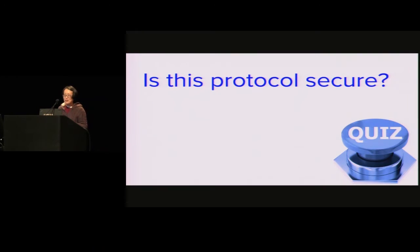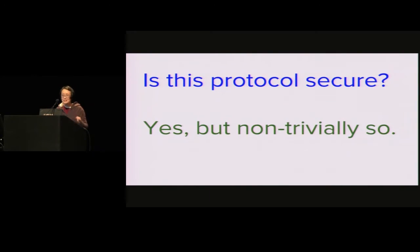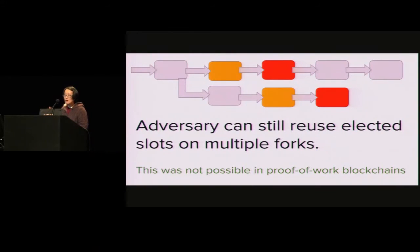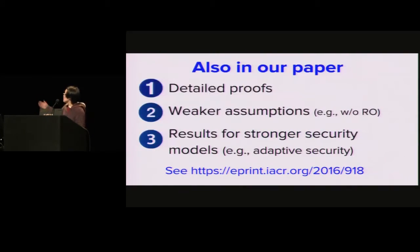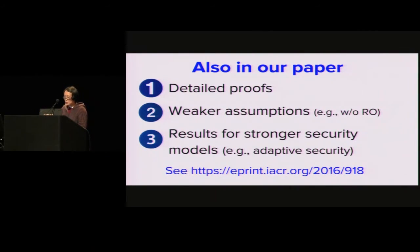Is this fixed protocol now secure? It turns out the answer is yes, but it's non-trivial. In this protocol, there are ways the adversary can attack the system that were previously not possible in the Nakamoto blockchain. Therefore, the previous Nakamoto blockchain analysis fails to work, and we have to do much more work to prove this protocol secure. I won't have time to cover the proof — if you're interested, you can read our paper. We're releasing a new version soon. In the paper we also have additional results: we can weaken the assumption by removing the random oracle, and we can achieve adaptive security through complexity leveraging.